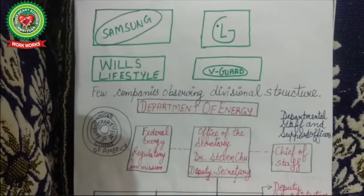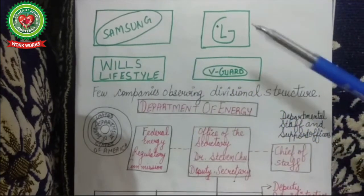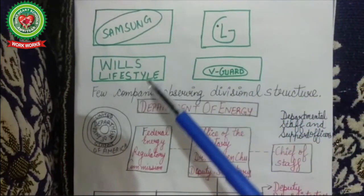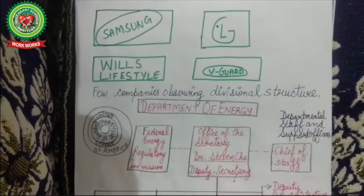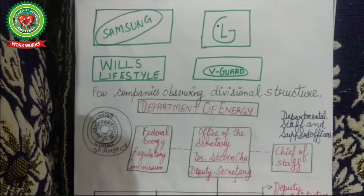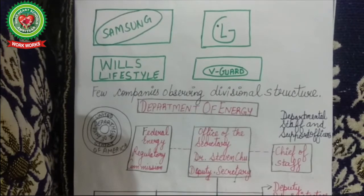Every company has a branded logo. Companies like Samsung, LG, and Wills Lifestyle follow divisional structure. Divisional structure is not followed in small organizations — it is followed in big companies and in associations and groups. Let us take an example of the Department of Energy, United States of America.